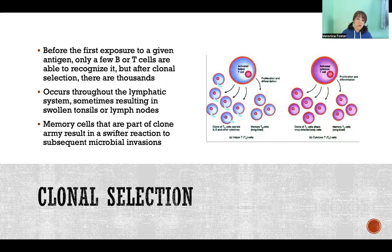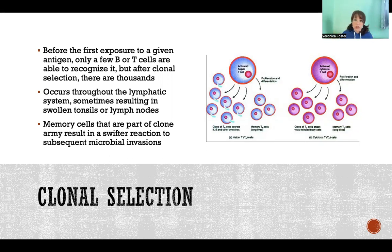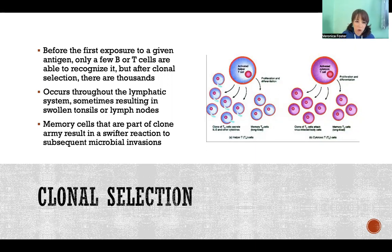Those clones will then spread throughout the lymphatic system, through our blood, into our tonsils, our lymph nodes, everywhere. And they're going to help to fight and destroy all of those exact pathogens — not any other pathogens, but only the one that was originally targeted by the first B or T cell that started this whole clone army.